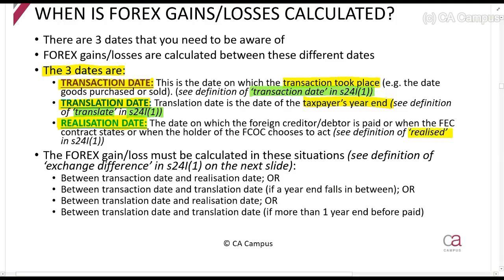You will calculate a forex gain or loss every single time you reach a translation date or a realization date. The transaction date is merely the starting point — there is no forex gain or loss there. For example, if the rate is R10 per dollar on transaction date and R11 on translation date, there is a forex gain or loss at that point, depending on whether you are a buyer or a seller.